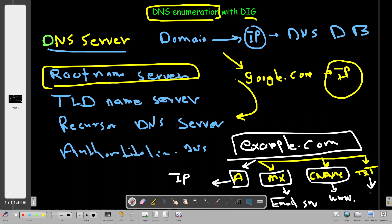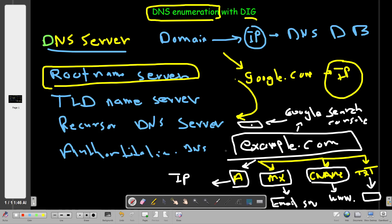Text records contain relevant DNS information such as verification information about third-party services integrated with the domain. For example, if a site uses Google Search Console — an SEO panel used to monitor website performance — you need to add a text record that Google provides. When you enumerate DNS records, you'll see such information under the text records.